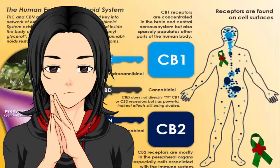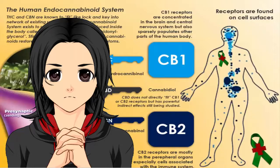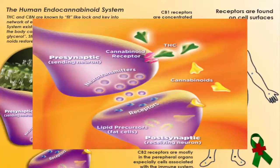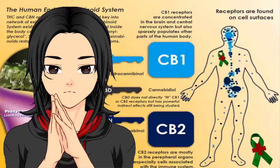The human body produces certain cannabinoids naturally all on its own. In fact, it has two receptors for cannabinoids: the CB1 receptors and CB2 receptors. CB1 receptors are present throughout the body, but many are also in the brain. The CB1 receptors in the brain deal with coordination and movement, pain, emotions, mood, thinking, appetite, memories, and many other functions as well. CB2 receptors, on the other hand, are more common in the immune system and they affect inflammation and pain.